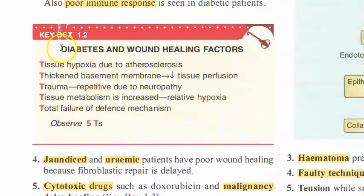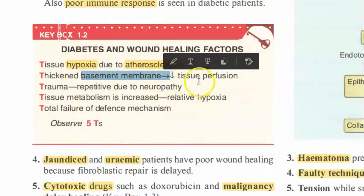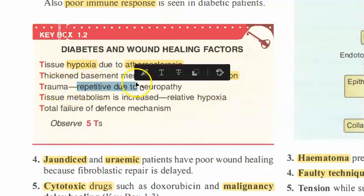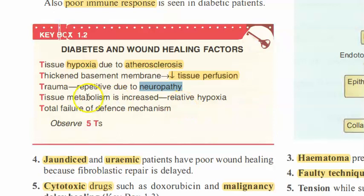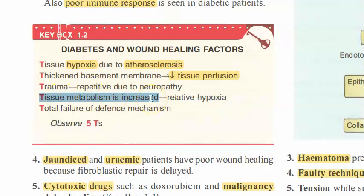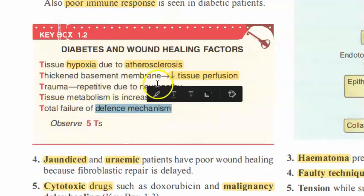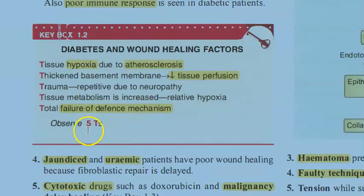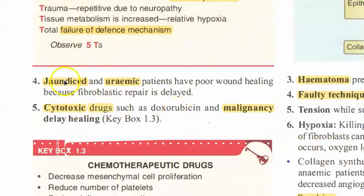Diabetic patients also have peripheral neuropathy causing poor immune response. There is tissue hypoxia due to atherosclerosis — not enough blood supply. A thickened basement membrane means low tissue perfusion. Due to neuropathy, they experience repetitive trauma without feeling pain. Increased tissue metabolism causes relative hypoxia, and there is a total failure of the defense mechanism — these are the five T's in diabetics.